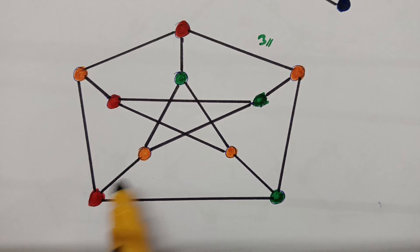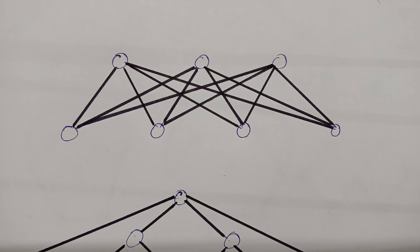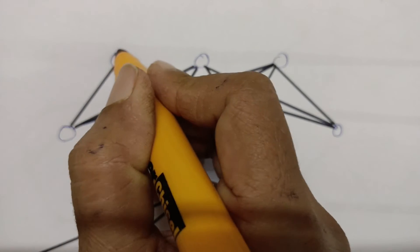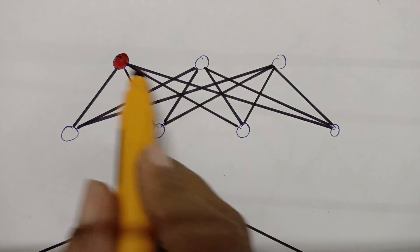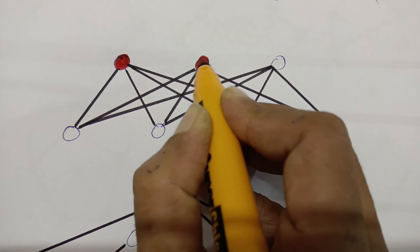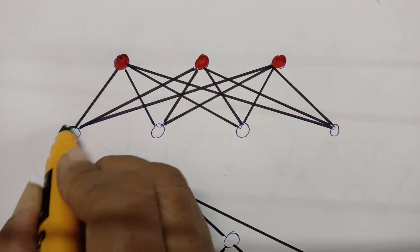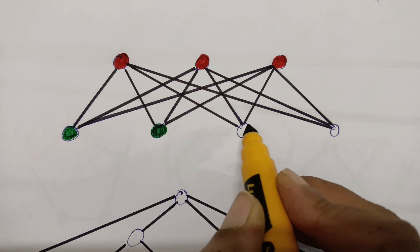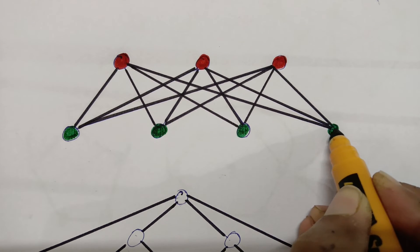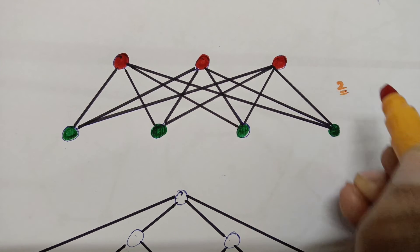This is a complete bipartite graph. Starting with red at the top — since the top vertices are not adjacent to each other, I use red for all of them. For the bottom vertices, none can be red, so I use green for all four. The chromatic number of the complete bipartite graph is two.